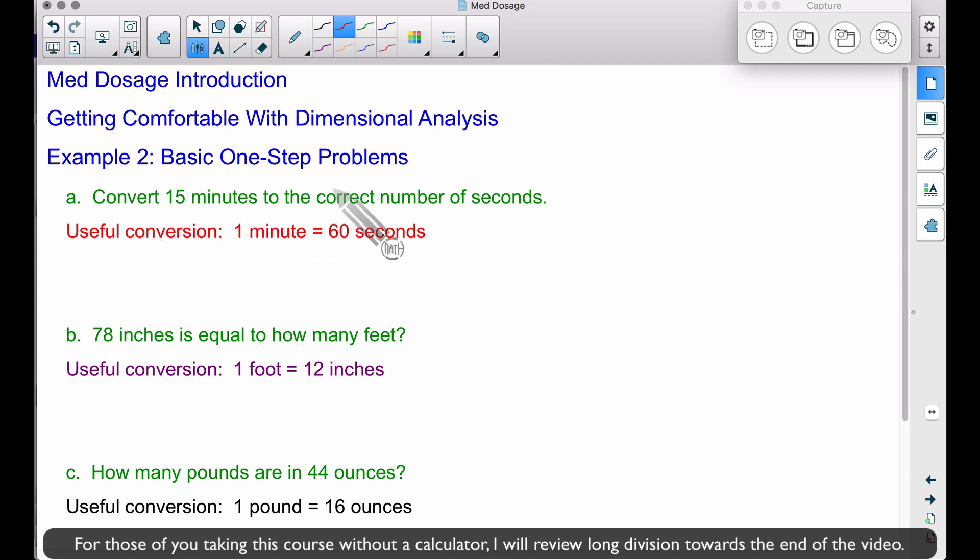Question A: Let's convert 15 minutes to the correct number of seconds. Some of you may know the answer is 15 times 60, because we have 15 minutes, 60 seconds per minute. But let's set this up using dimensional analysis. 15 minutes is what we have, so I'm going to write 15 minutes as a fraction over 1.